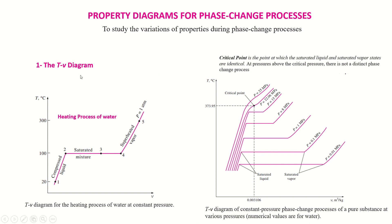The first one is the T-V diagram. Before explaining the T-V diagram, you must understand the heating process of water. When we start heating water, it is normally at 20 degrees centigrade, and when it reaches 100 degrees centigrade it starts boiling. At 100 degrees centigrade, water starts converting into vapors.